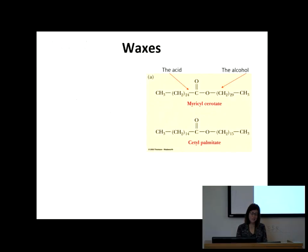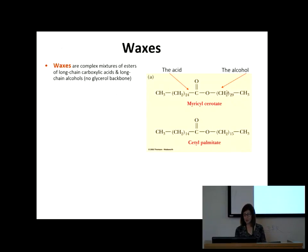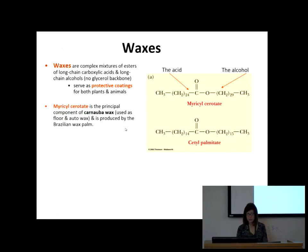Waxes don't really do a lot biologically. They are formed when we put together a long-chain fatty acid with a long-chain alcohol. You can make any ester from an alcohol and an acid, but what makes a wax different is that both the acid and the alcohol are long chains. They serve as protective coatings for plants and animals. Carnauba wax — the kind you buy for your car floor or auto finish — is this type.